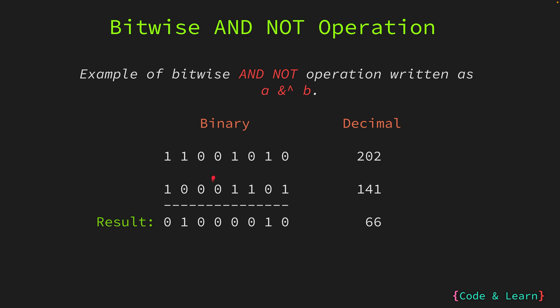Next we have 0 in A and 0 in B — since the bit is not set in the first number, the resultant bit will be 0. Next we have 0 and 0 again, result is 0. Next we have 1 and 1 — the bit is set in the first number but also in the second, so the result is 0. Next we have 0 and 1 — bit is not set in first, result is 0. Next we have 1 and 0 — bit is set in first but not in second, result is 1. The last bit is not set in the first number so the result will be 0.